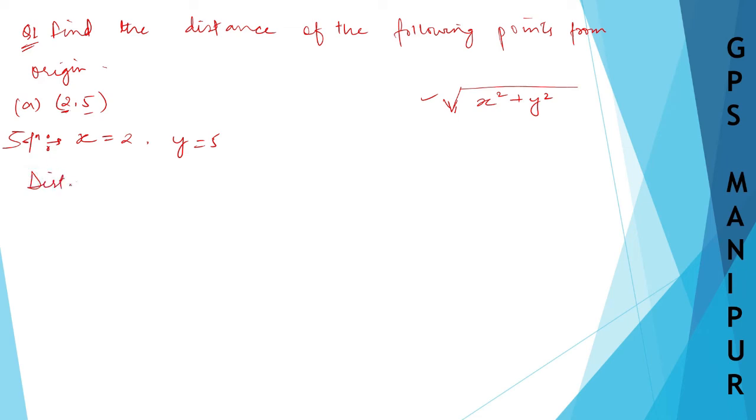Distance of (2,5) from origin is equal to √(x² + y²), which will be equal to √(2² + 5²). 2 squared is 4, 5×5 is 25, 25 + 4 is 29, and √29.